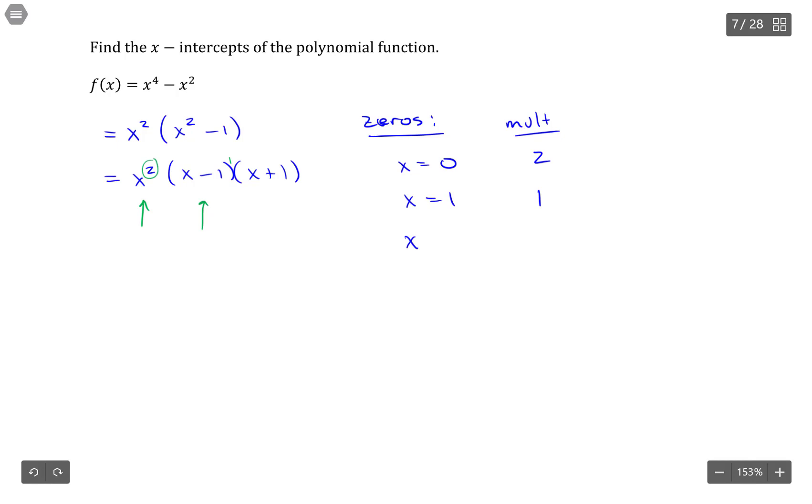And the last zero is negative 1, and its multiplicity is also 1. Now, because these are all real numbers, that means that these are also the x-intercepts.